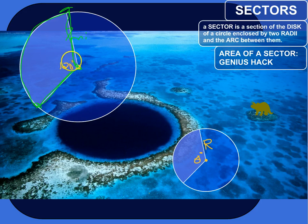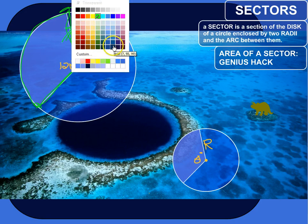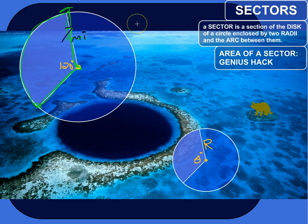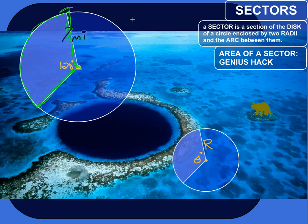So the central angle is 120 degrees and the radius is 7 miles. Now, there is a formula for the area of a sector of a circle, but we're going to do the genius hack — we're just going to figure it out using our brains. We'll actually end up deriving the formula, which is high-level stuff.